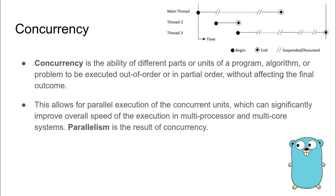Concurrency allows for parallel execution of the concurrent units, which can significantly improve the overall speed of execution, especially in multi-processor and multi-core systems. Therefore, parallelism is the result of concurrency.